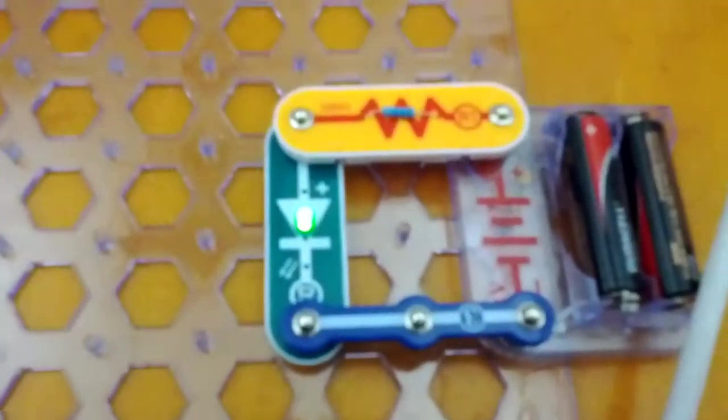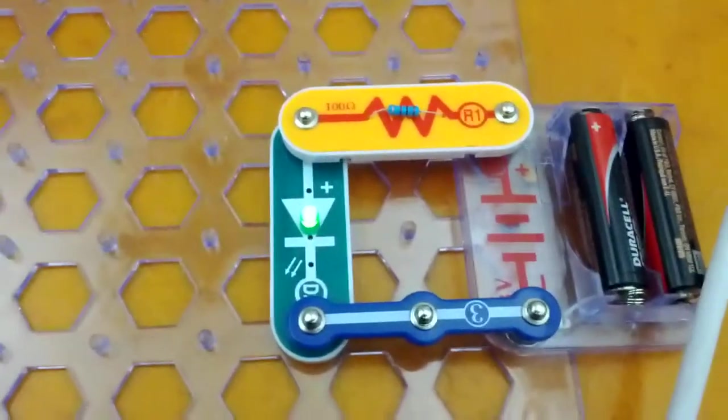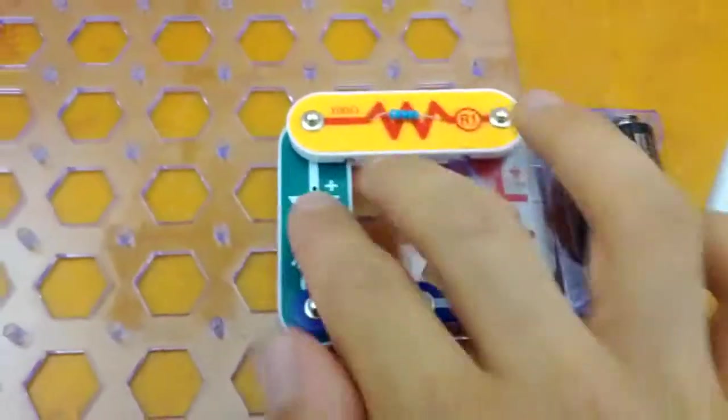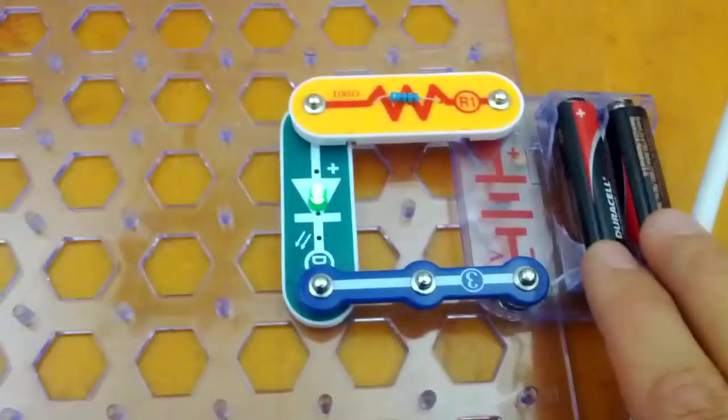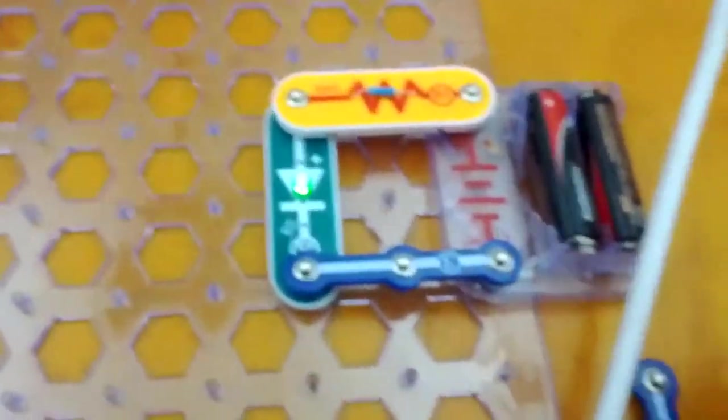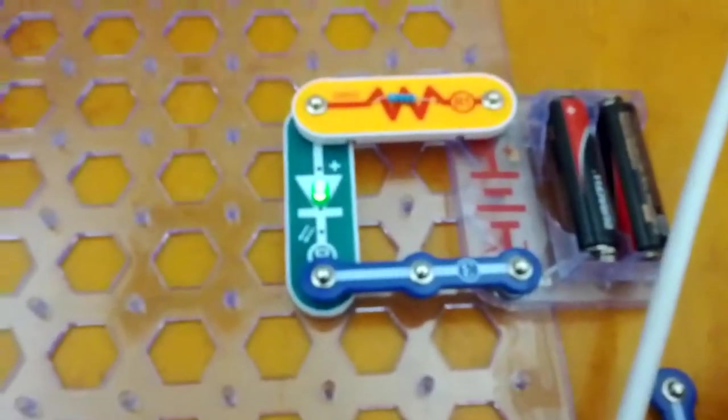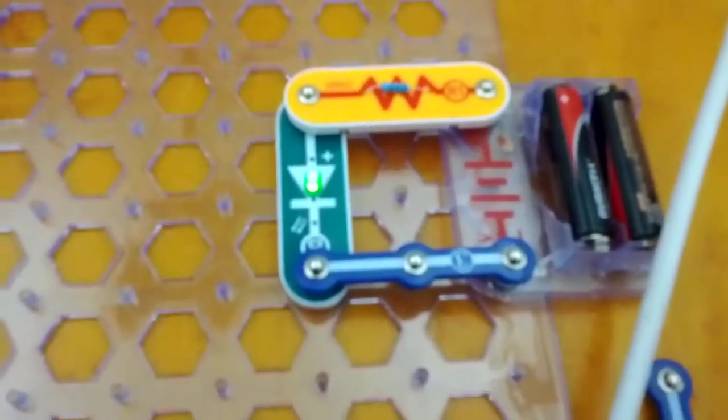That's how we protect our components using a resistor. We control the current, we kind of tame it, I guess you can say, so that it won't destroy the parts we use.